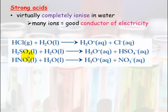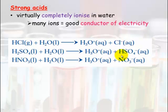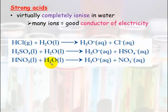H₂SO₄, which is sulfuric acid, is also a strong acid because it almost completely ionizes in water. We put that into water and it forms H⁺ and HSO₄⁻, which is the conjugate base. HNO₃ is nitric acid — also a strong acid. Put that in water and it ionizes into H⁺ plus NO₃⁻, which is the conjugate base.